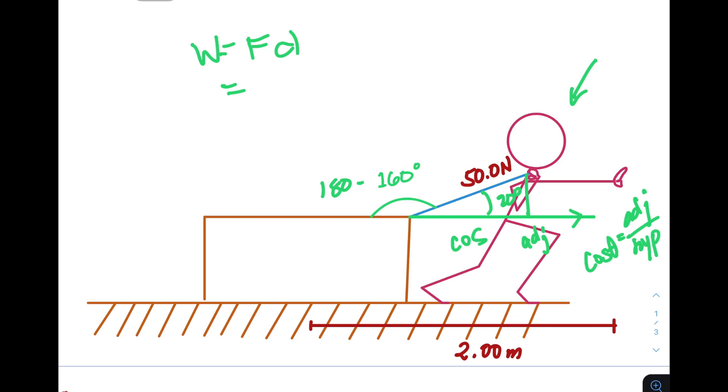Now the hypotenuse here is the force, the 50 newtons. So if we derive the force, that would be force, cosine, and then the theta or the angle times the distance.